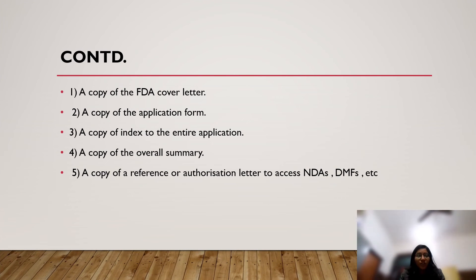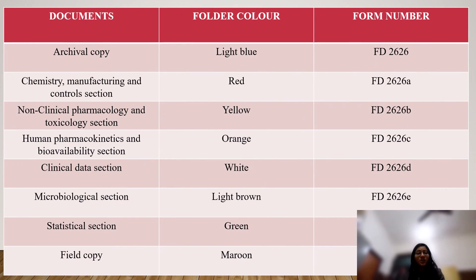The board documents required also include a copy of the FDA cover letter, a copy of the application form, a copy of the index to the entire application, a copy of the overall summary, and a copy of a reference or authorization letter to access the new drug application or drug master file. These are the documents required for filing a new drug application along with their folder color and form number.